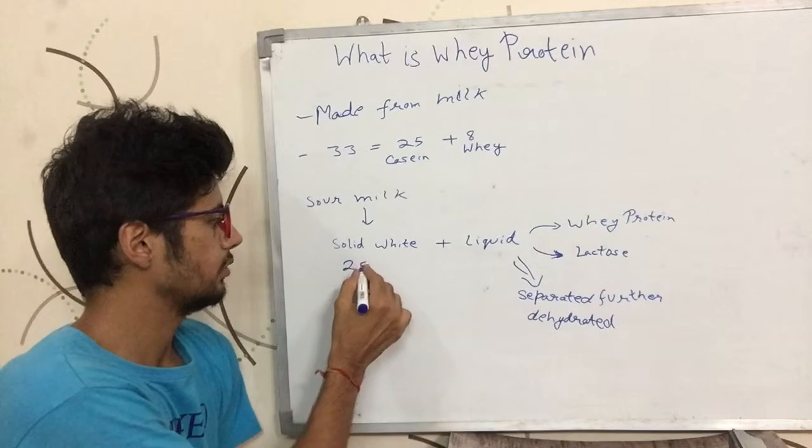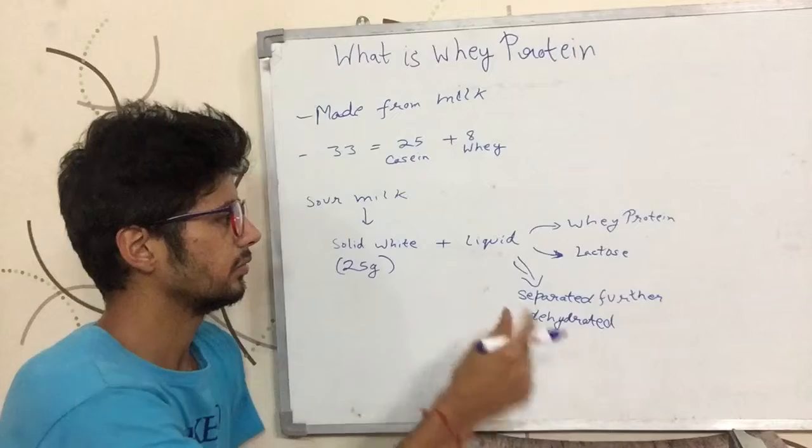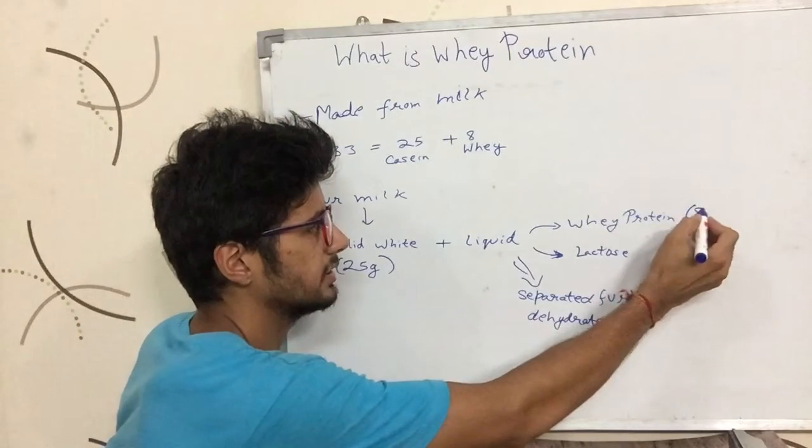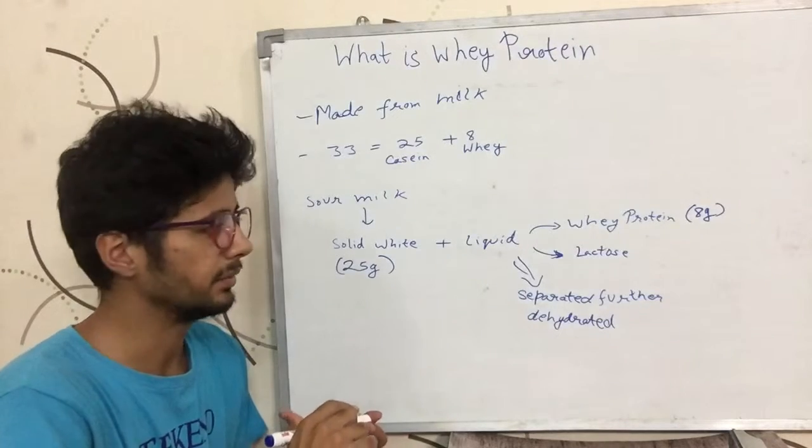The solid white part has around 25 grams of casein protein and the liquid part has around 8 grams of whey protein plus lactose which is the sugar in the milk.